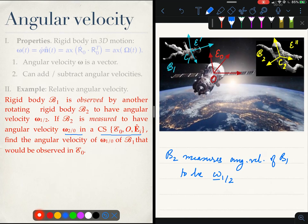We can write down B2 has angular velocity omega 2 0 with respect to the body fixed coordinate system E0. The question we are asked is find out the angular velocity of this astronaut, astronaut 1 B1, with respect to the spacecraft. How would you do that?